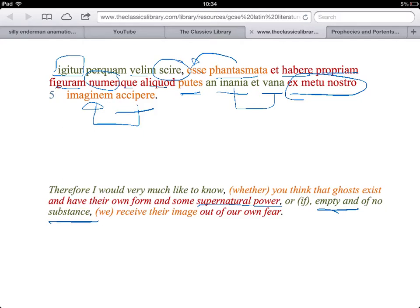So this is the philosophical question that's being set up here. Do they have their own shape? Do they have supernatural power? Or are they just insubstantial shadows? And we give them form arising from our own fear. So we've got two phrases balancing here. We've got that they, ghosts exist - that's the first one. And then that they have two properties: propria figuram and quae aliquod numen. And then balancing with that around the axis of the verb, we have the negative properties, inannia et vana.